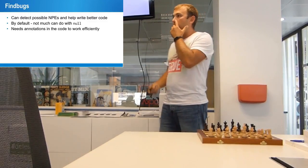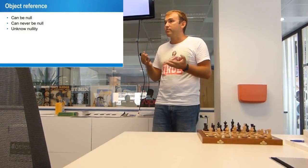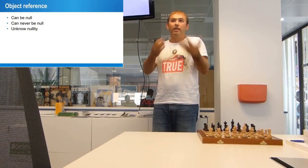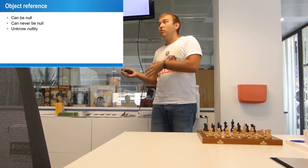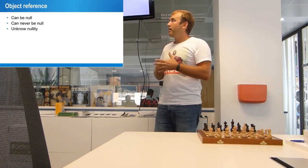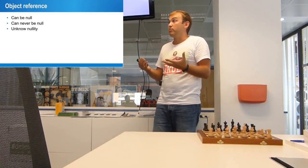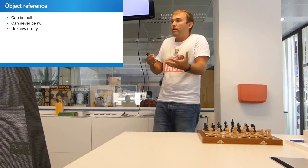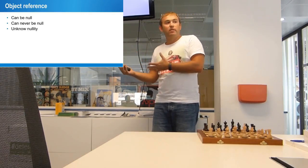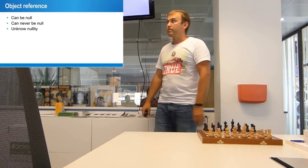Before thinking about what annotations to use, let's consider what states an object reference can have. Basically three states: it can be null, it can never be null, or it's an unknown state. By default, if we don't mark anything with annotations, FindBugs assumes it's an unknown state — it doesn't know whether it could be null or should never be null.